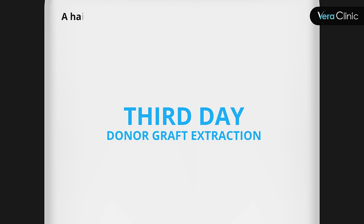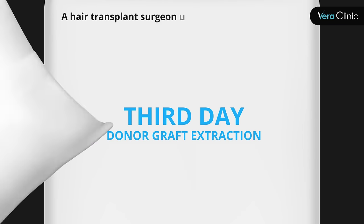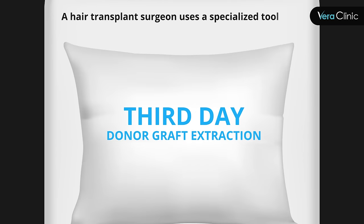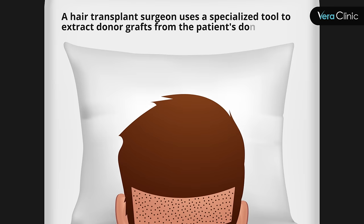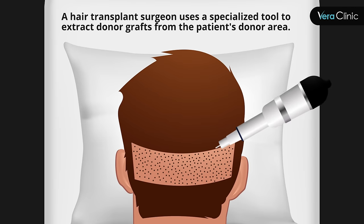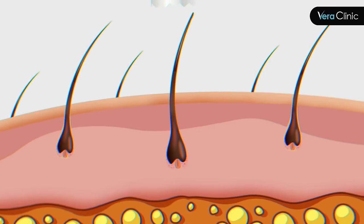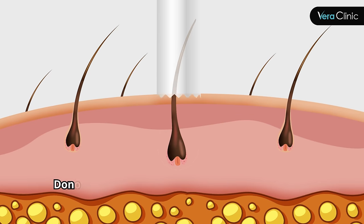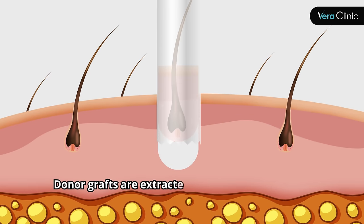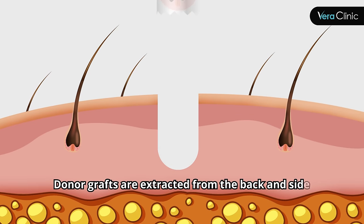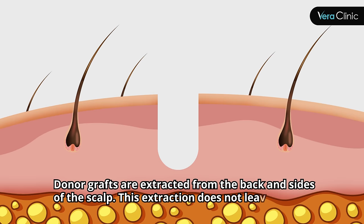Third Day — Donor Graft Extraction: A hair transplant surgeon uses a specialized tool to extract donor grafts from the patient's donor area. Donor grafts are extracted from the back and sides of the scalp. This extraction does not leave a scar.